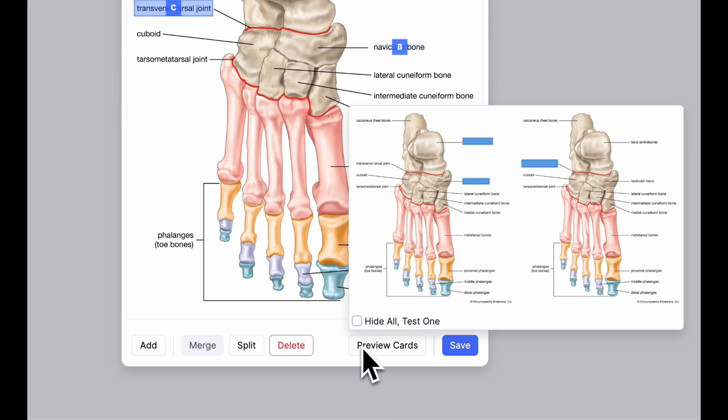Now, at this point, you can also enable the Hide All Test 1 option, which conceals all other occlusions during the test, preventing accidental exposure to the answers for other hidden sections.